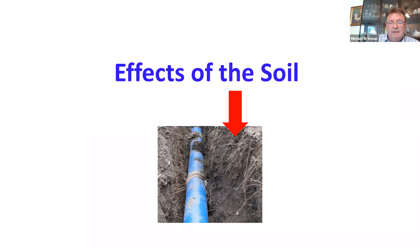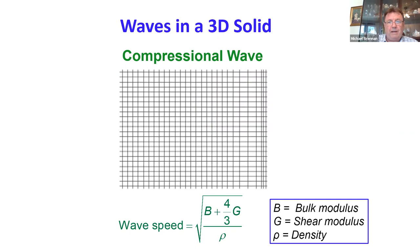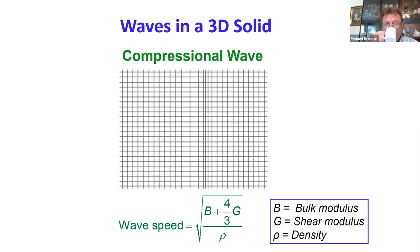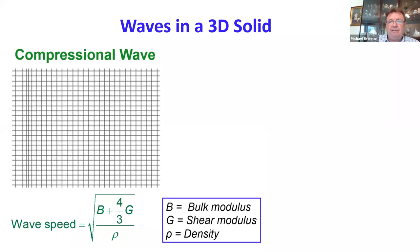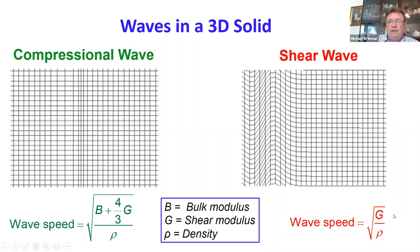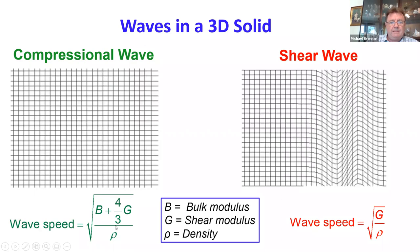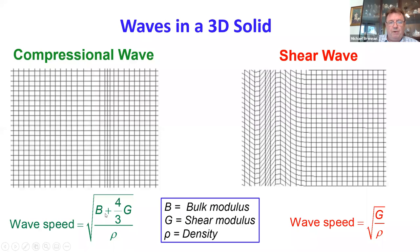Now let's look at the effects of the soil. In the soil, there are two waves that can propagate. One is a compressional wave, and the other is a shear wave. The shear wave propagates at a speed that is a function of the shear modulus and density of the soil, while the compressional wave propagates at a much higher speed, dependent on both the bulk modulus and shear modulus of the soil.